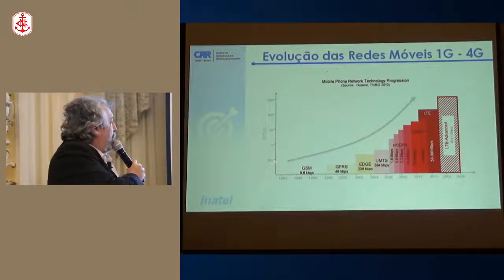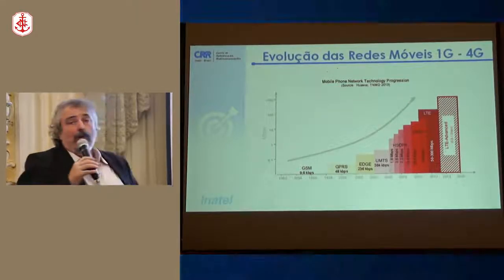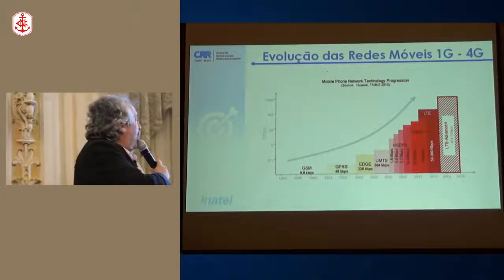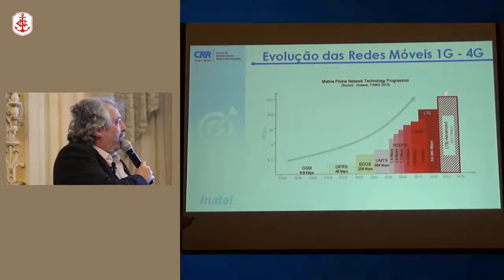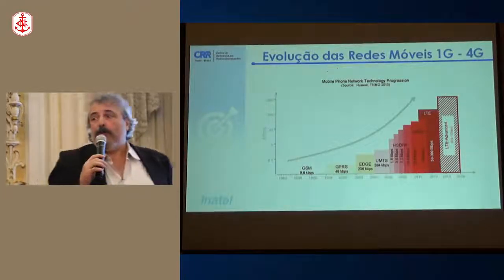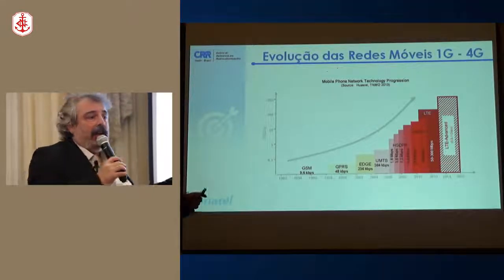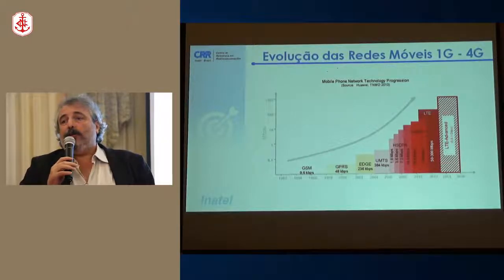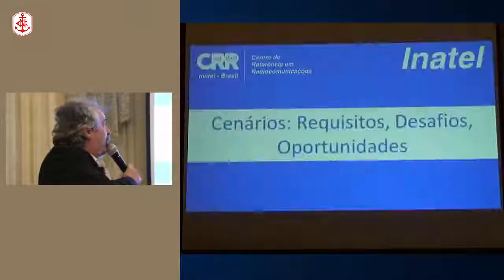O que queria chamar atenção é o processo de evolução que tivemos do 2G até o 4G. Do 2G para o 4G, o que evoluiu foi a taxa de transmissão à disposição do usuário. Começamos com 9,6 kbps e chegamos a 1 gigabit por segundo de pico no 4G. No 5G, esse cenário de evolução de taxa também vai acontecer, mas não é só isso. O 5G é muito mais do que uma simples evolução de taxa de transmissão.